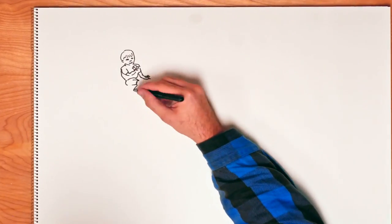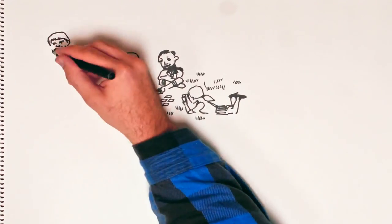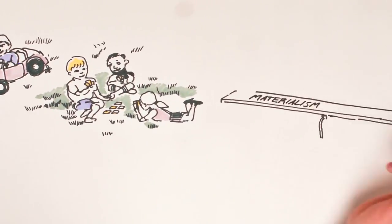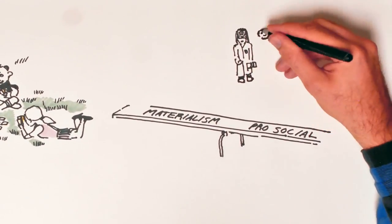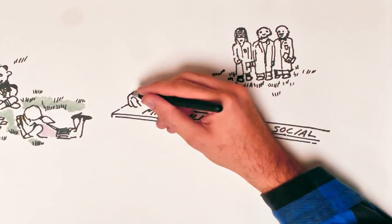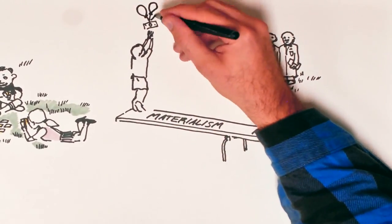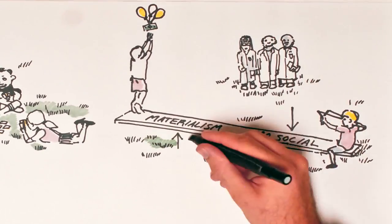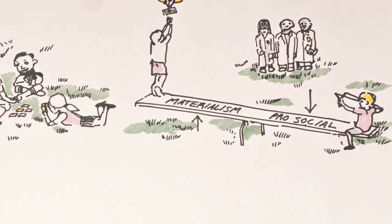Strong materialistic values also influence our social relationships and thereby affect other people's well-being. Scientists have found that materialistic values and prosocial values are like a seesaw. As materialistic values go up, prosocial values tend to go down. This helps explain why people act in less empathic, generous, and cooperative ways when money is on their minds.